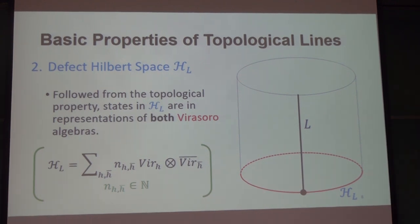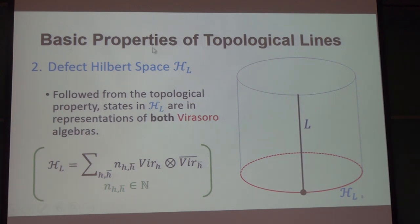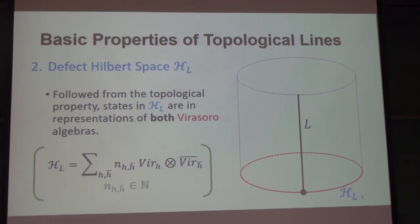Just to understand the language — when this topological line corresponds to a usual global symmetry, what is the defect Hilbert space? When the topological line is a symmetry line, the way it modifies the Hilbert space is that instead of having fields that are periodic on the circle, the periodicity condition becomes that when the field goes around the circle it is acted on by the symmetry — it becomes the twisted sector.